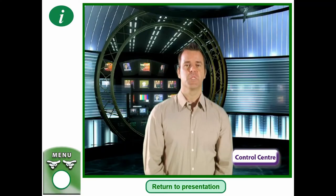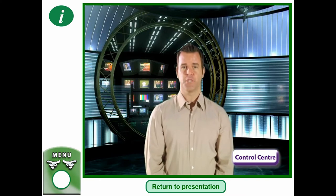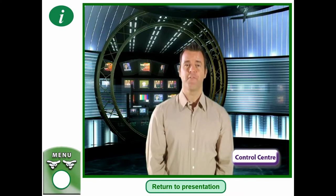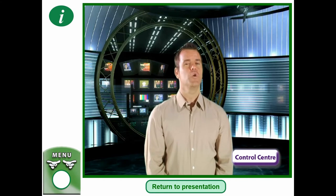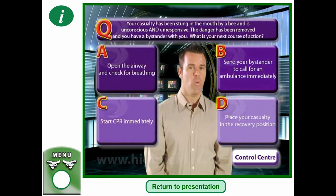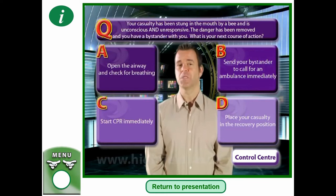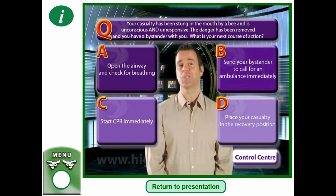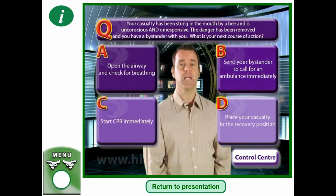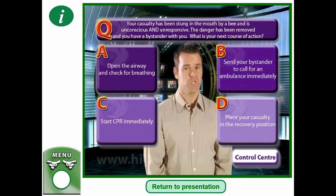Your casualty has been stung in the mouth by a bee and is unconscious and unresponsive. The danger has been removed and you have a bystander with you. What is your next course of action? A: Open the airway and check for breathing. B: Send your bystander to call for an ambulance immediately. C: Start CPR immediately. Or D: Place your casualty in the recovery position.